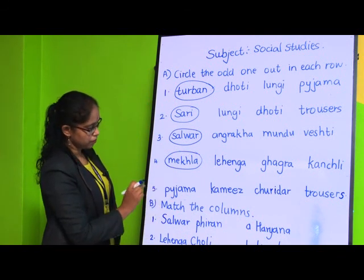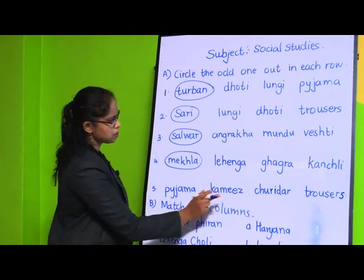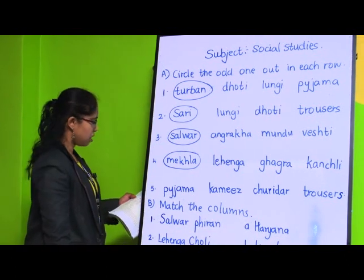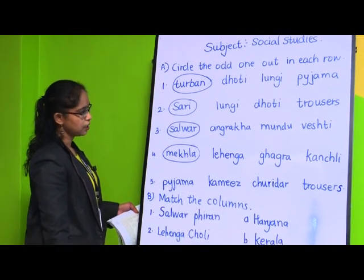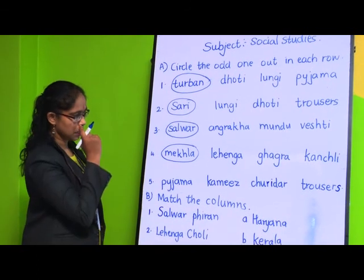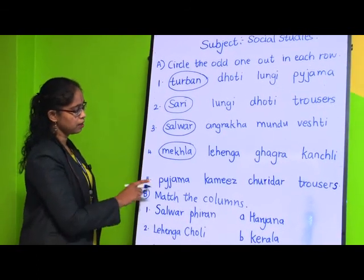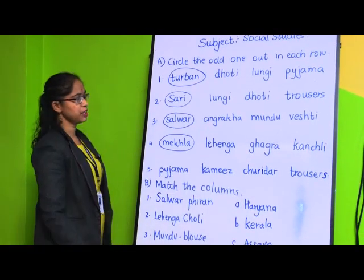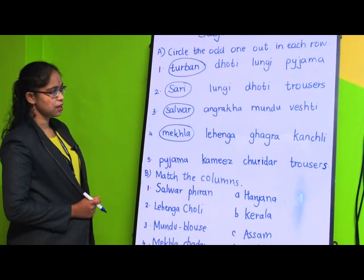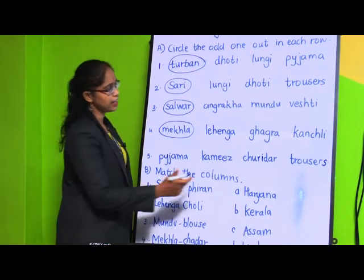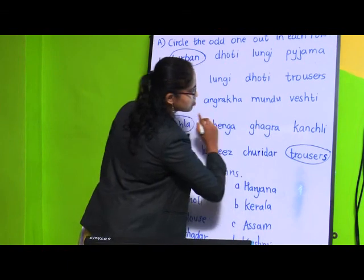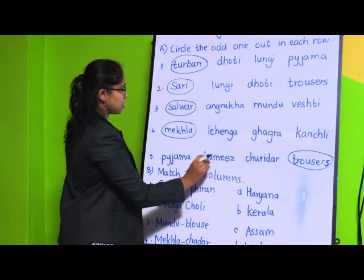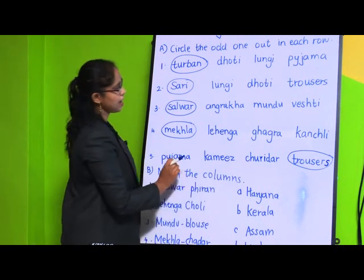Fifth question: Pajama, kameez, churidhar, trouser. The answer is trouser because trouser is worn by men, and pajama, kameez, and churidhar are worn by women.